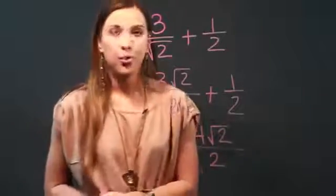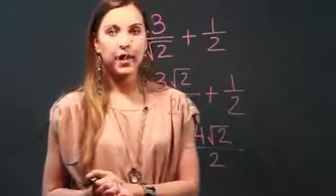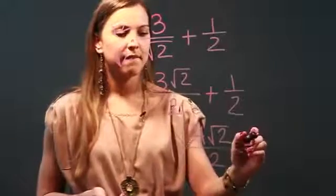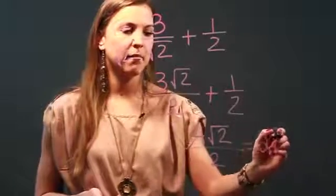So I have 4 radical 2 over 2, and now the only thing that I can do with this is simplify it. So 4 divided by 2 is just 2, and I keep my radical 2.